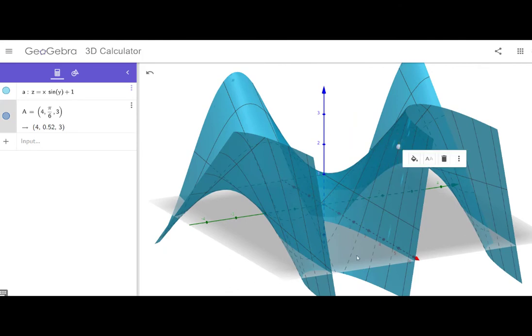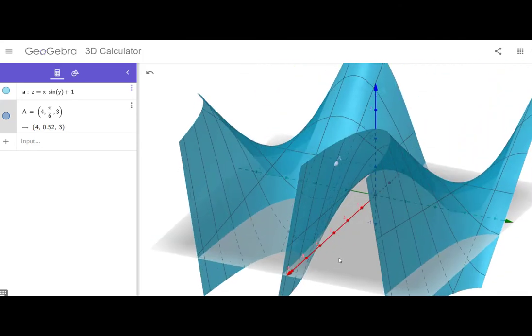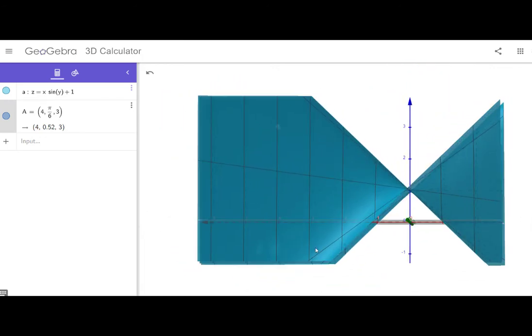There's some interesting features of this graph. If I get just right here, I can see that z is equal to 1.